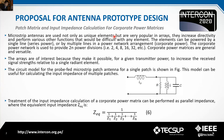Microstrip antennas are used not only as unique elements but are very popular in arrays. They increase directivity and perform various other functions that would be difficult with a single element. The elements can be powered by a single line (series feed) or by multiple lines in a corporate feed network arrangement. The corporate feed is used to provide 2^N power divisions: 2, 4, 8, 16, 32, 64, etc. Corporate feed matrices are general and versatile. Arrays are of interest because they make it possible for a given transmitter power to increase the received signal strength relative to a single radiating element.